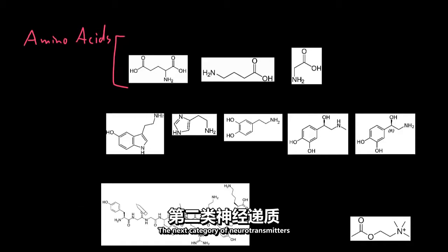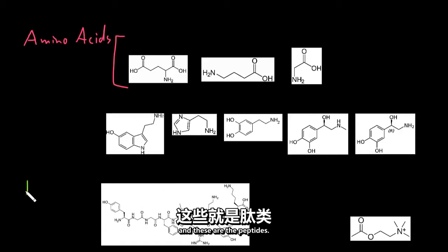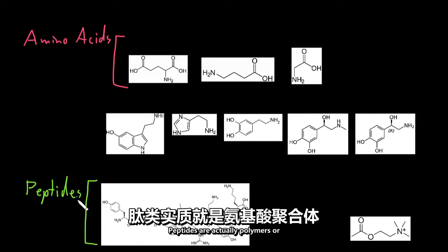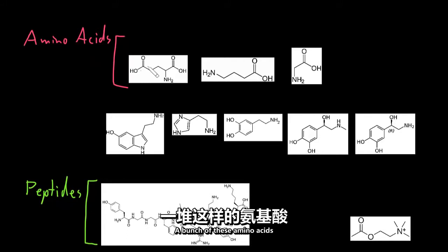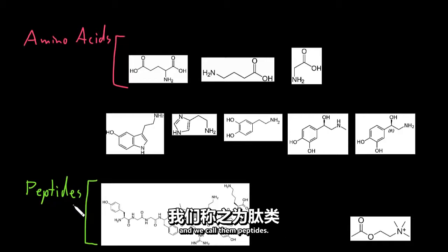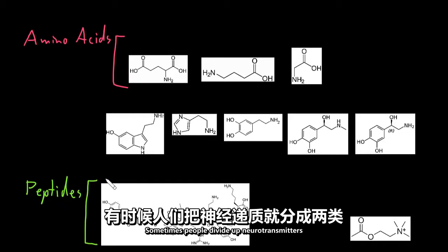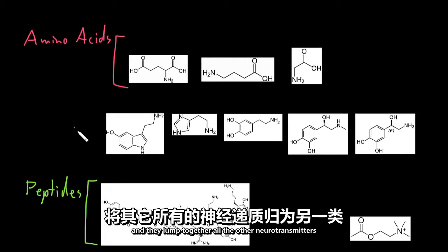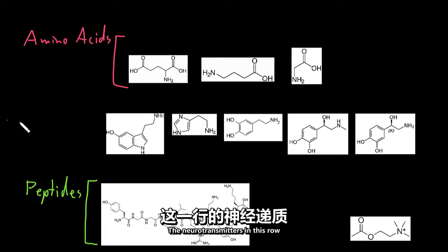The next category of neurotransmitters is the peptides. Peptides are actually polymers or chains of amino acids — a bunch of amino acids get strung together in these chains, and we call them peptides. Peptides are much larger molecules than all the other types of neurotransmitters, so sometimes people divide up neurotransmitters just into peptides and lump together all the others, calling them small molecule neurotransmitters.